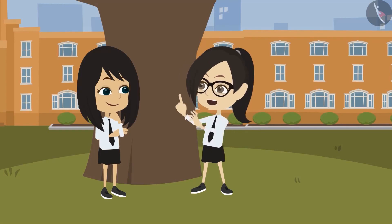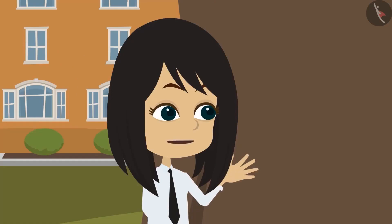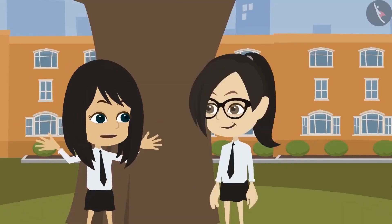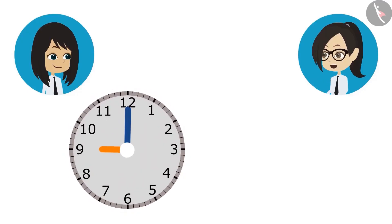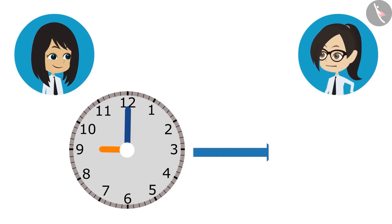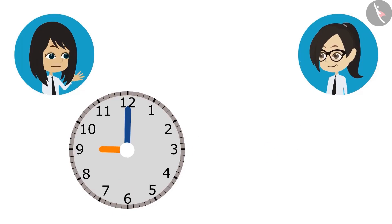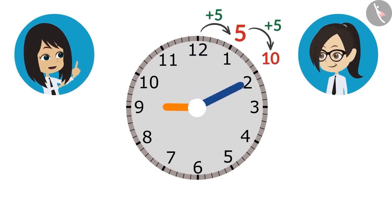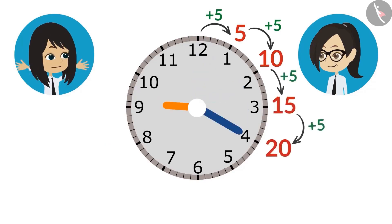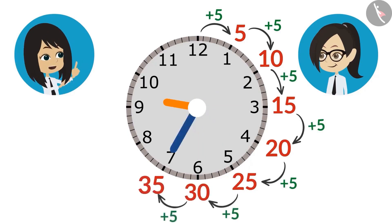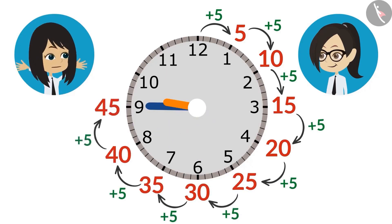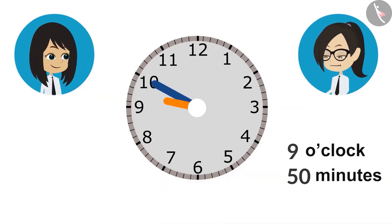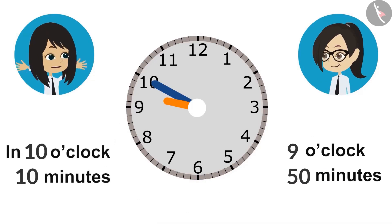Now let us find out: a class that is 50 minutes long — at what time will it finish if it starts at 9 o'clock? The start time and duration are known; we have to find the end time. The minute hand is at 12 at the start. When we bring it to 1, it will be 5 minutes; to 2 is 10 minutes; 15 at 3, 20 at 4, 25 at 5, 30 at 6, 35 at 7, 40 at 8, 45 at 9, and 50 minutes at 10. This means our class will end at 50 minutes past 9 o'clock, or 10 minutes to 10 o'clock.